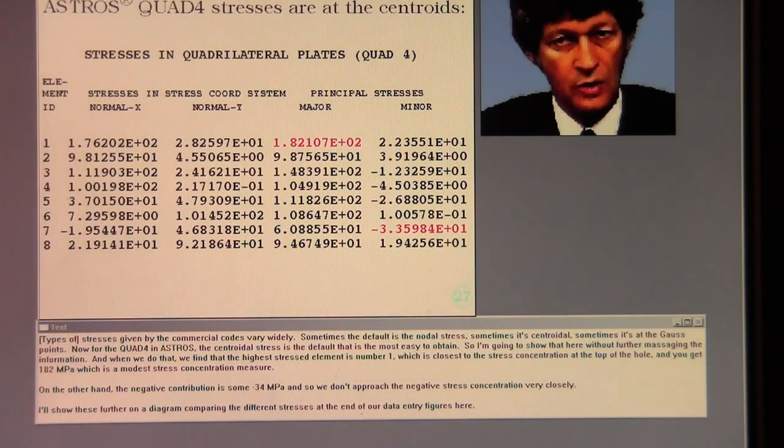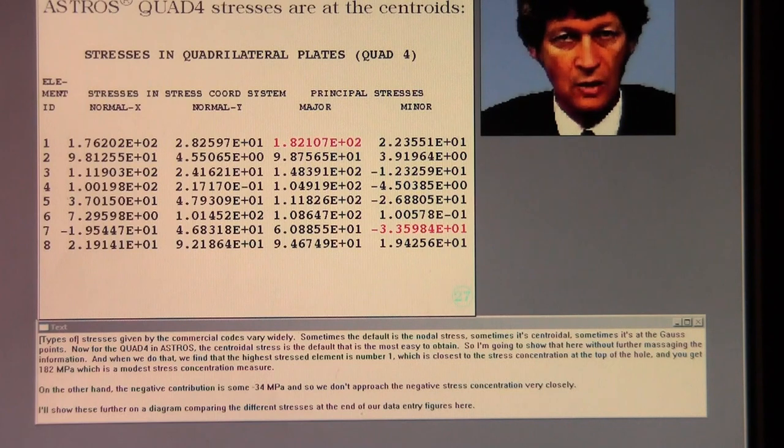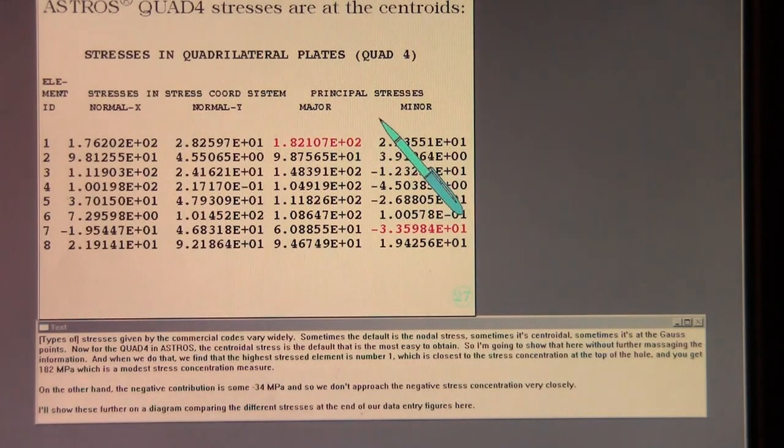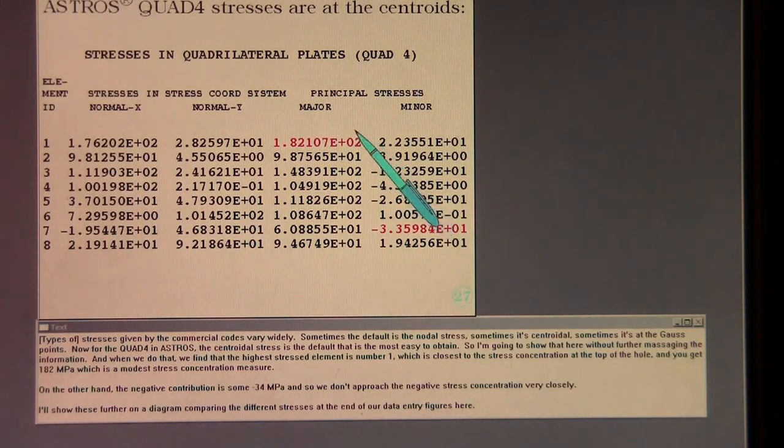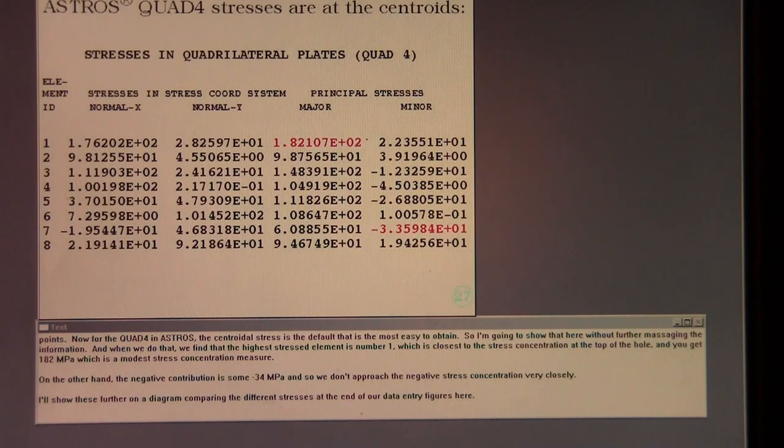Stress is given by the commercial codes very widely. Sometimes the default is the nodal stress, sometimes it's centroidal, sometimes it's at the Gauss points. Now for the Quad4 and Astros, the centroidal stress is the default that's the most easy to obtain. So I'm going to show that here without further massaging the information. And when we do that, we find that the highest stressed element is number one, which is closest to the stress concentration at the top of the hole. And you get 182 megapascals, which is a modest stress concentration measure. On the other hand, the negative contribution is minus some 34 megapascals, and so we don't approach the negative stress concentration very closely. I'll show these further on a diagram comparing the different stresses at the end of our data entry figures here.